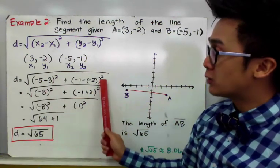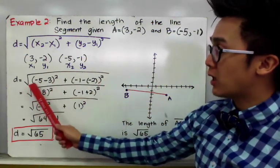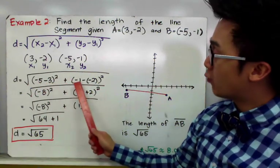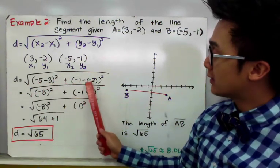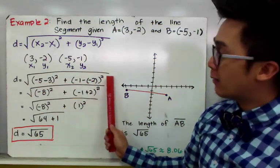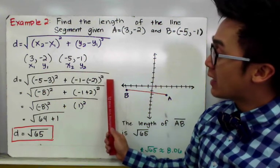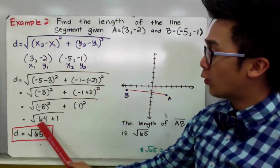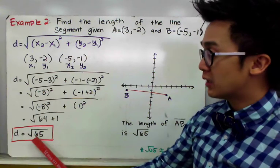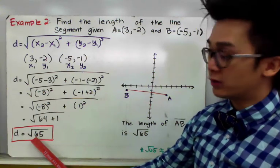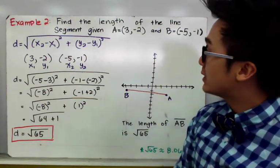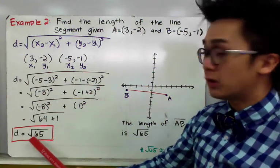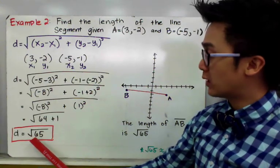By direct substitution, we'll have the square root of (−5 minus 3) squared plus (−1 minus −2) squared. Simplifying, we get the square root of 64 plus 1, which gives us the square root of 65. So the distance between line segment AB is equal to the square root of 65.